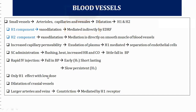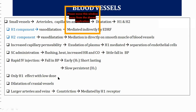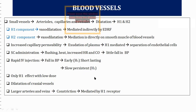At low doses, only H1 effects are seen because all available histamine goes to H1 receptors, producing a short-duration fall in BP. At high doses, histamine acts on both H1 and H2 receptors. In cases of histamine toxicity or overdose causing a fall in BP, we need to give antihistamines that block both H1 and H2 receptors.